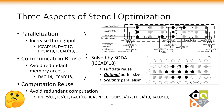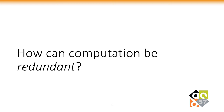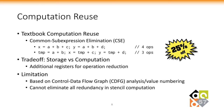You may be curious: how can computation be redundant? The most well-known computation reuse technique is called common subexpression elimination, which trades additional registers for operation reduction. In the example shown, A plus B can be reused at the cost of storing the result in an additional register. CSE is usually based on CDFG analysis or value numbering, and it cannot eliminate all redundancy in stencil computation.